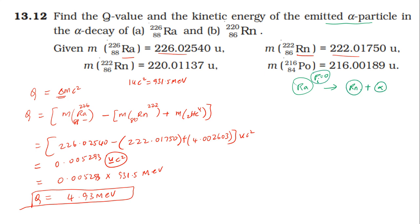The Q value is approximately 4.93 million electron volts. The momentum of the system is also zero, and the alpha particle and radon move in opposite directions with equal and opposite momenta. The kinetic energy is expressed in the form of p-squared over 2m.